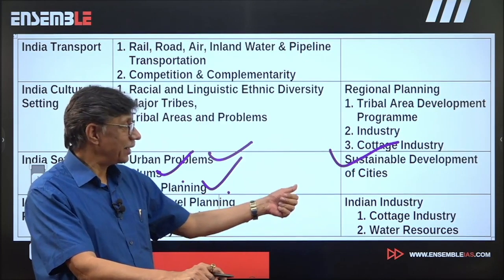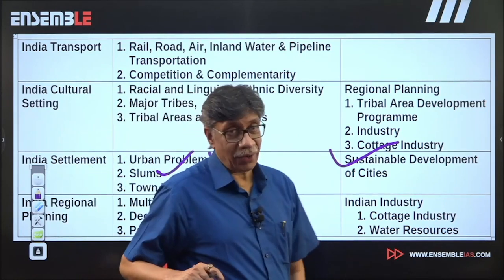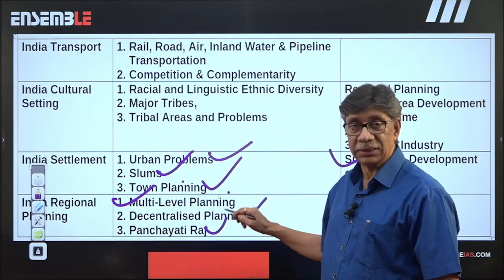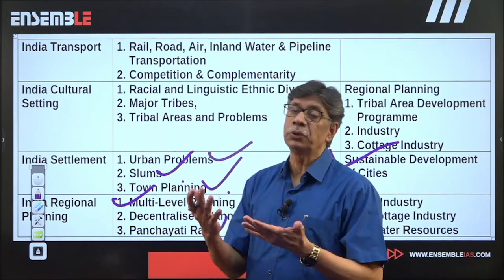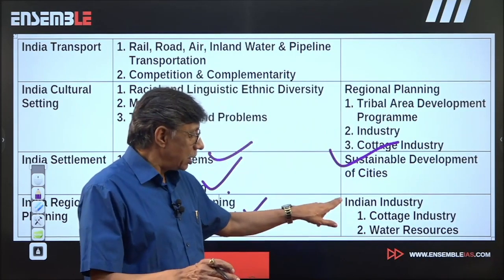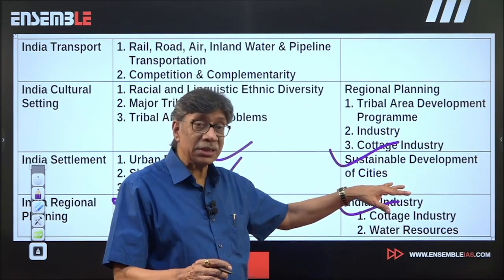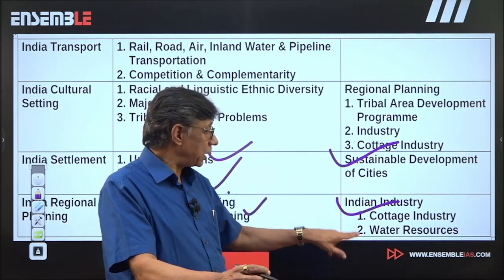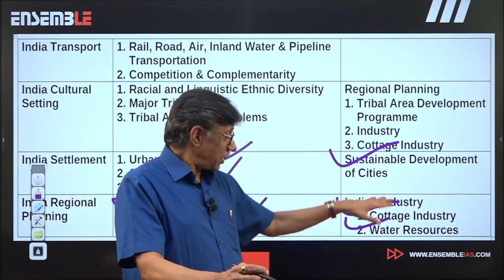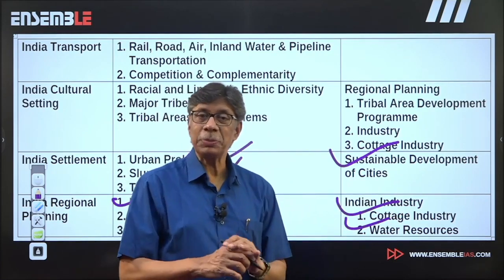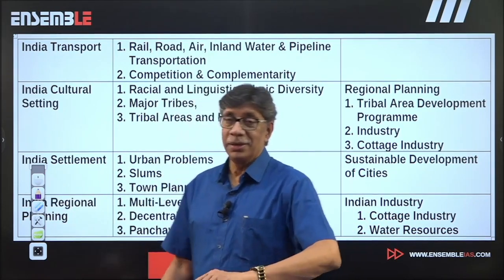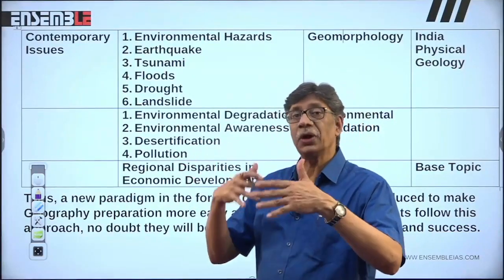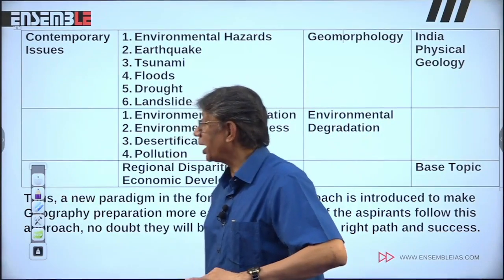In regional planning, the topics of multi-level planning, decentralized planning, and panchayati raj cannot be understood without understanding cottage industry, because cottage industry is responsible for a decentralized development model. Water resources are also part of this cluster. Again, five topics come out of this type of cluster. All in all, when you pick up such structures, you find your effort keeps getting less and less while your coverage grows more and more.